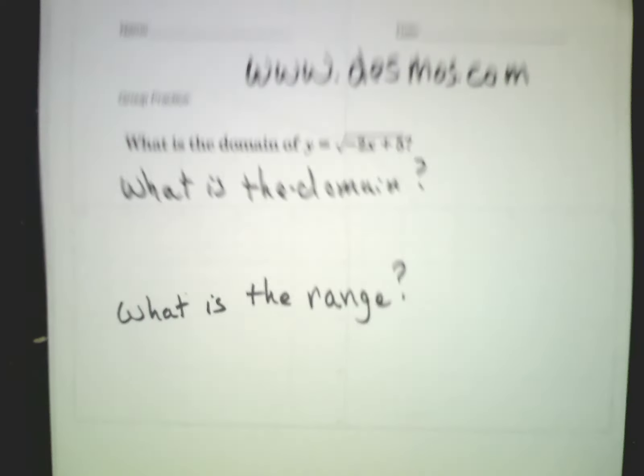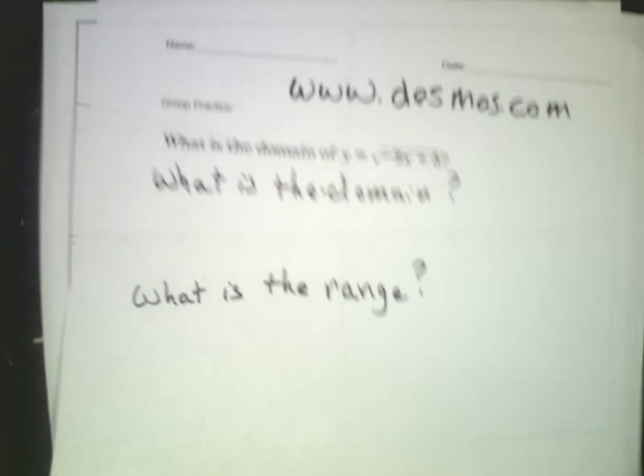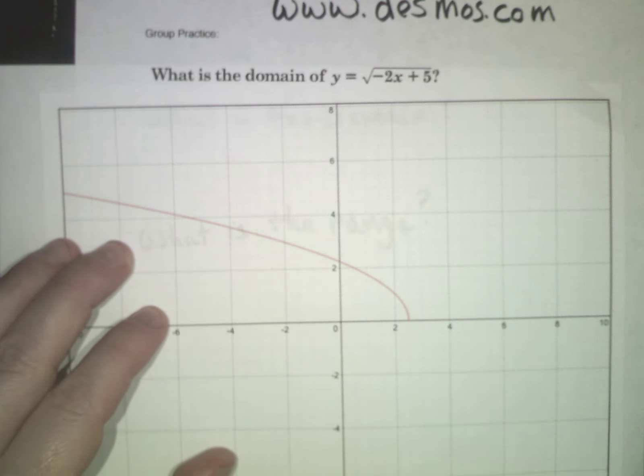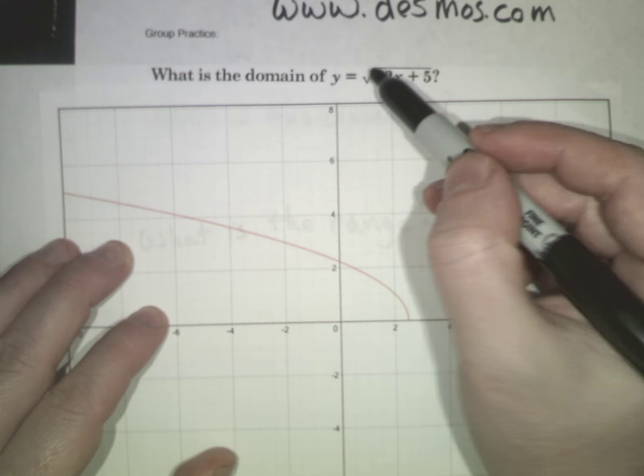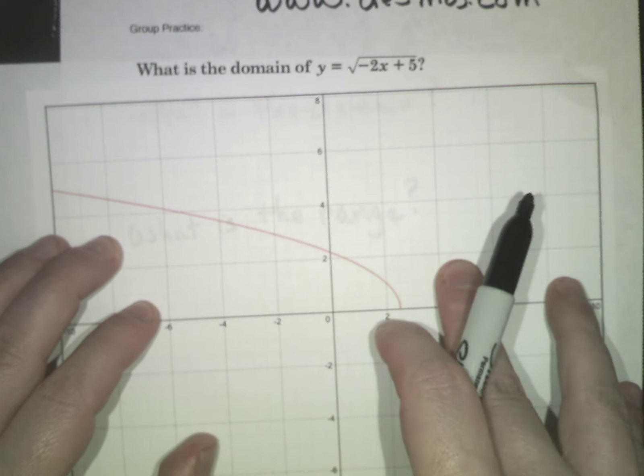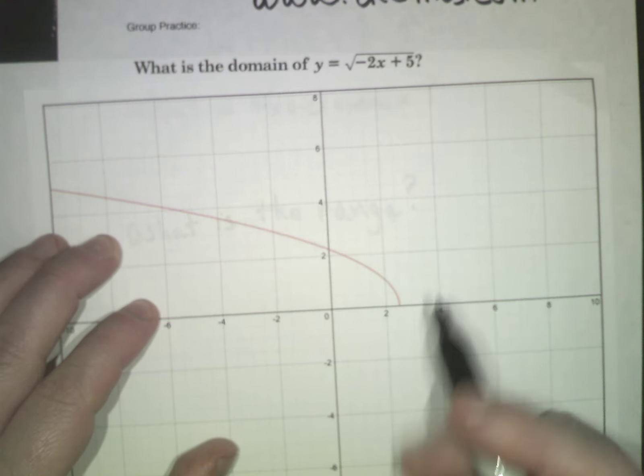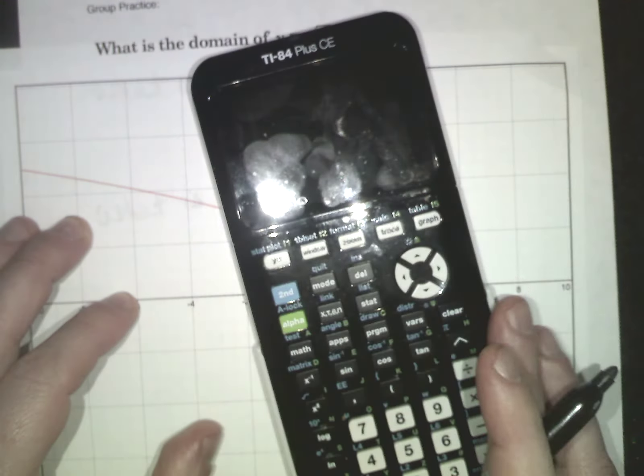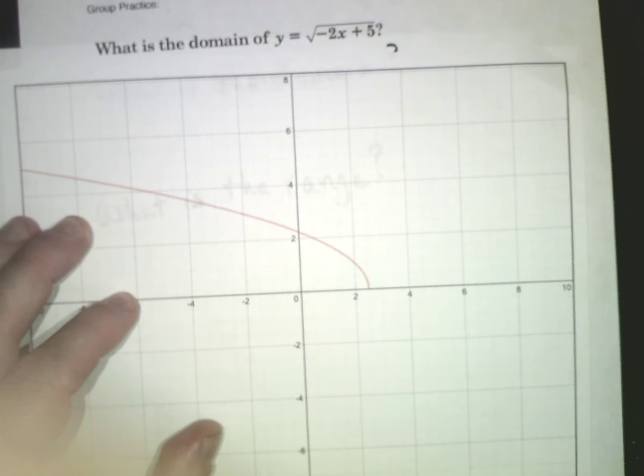I went on Desmos earlier. One of the nice things about the Desmos app is that you can print out a graph that you worked on. Sure enough, here is the graph for y equals square root of negative 2x plus 5. I'm just putting it here so it's easy to see with nice big numbers instead of trying to put it on a little screen like my calculator.